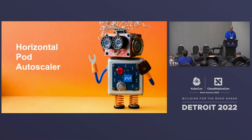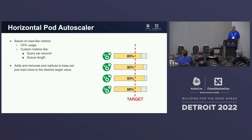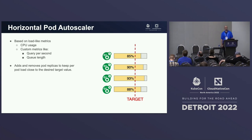The first component I want to talk about is the Horizontal Pod Autoscaler. HPA is based on metrics that express the load that the application gets. It can be either real CPU usage or something more custom like the number of queries per second, or other goals like a value provided by the user.